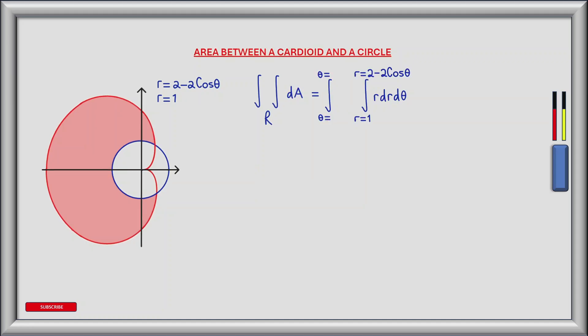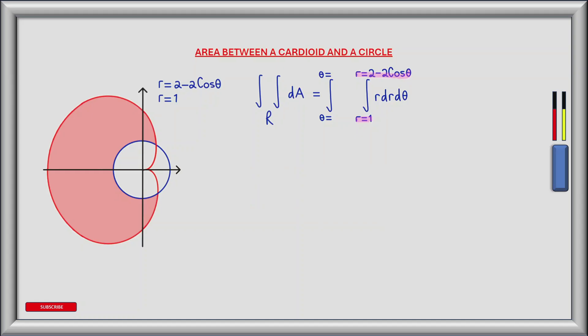For the inner integral the lower limit is at the boundary of the circle and the cardioid, so where r is equal to 1, and the upper limit extends to the polar curve of the cardioid, so where r is equal to 2 minus 2 cos theta.